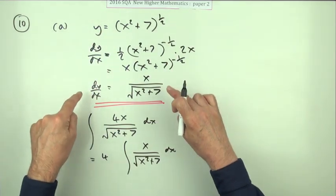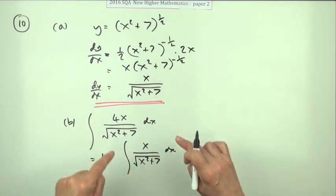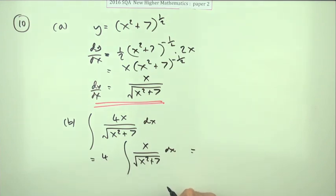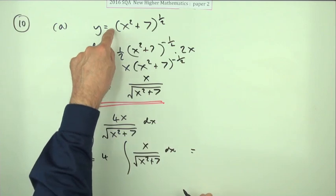If that produced this, this produces that, but this is equal to this, so this goes back to that. So that means it should equal, and I'll not leave myself any room now, it should be 4 times this.